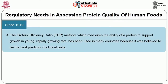Since 1919, the Protein Efficiency Ratio (PER) method, which measures the ability of a protein to support growth in young, rapidly growing rats, has been used in many countries because it was believed to be the best predictor of clinical tests. However, after decades of use, it is now known that the PER overestimates the value of some animal proteins for human growth while underestimating the value of some vegetable proteins.